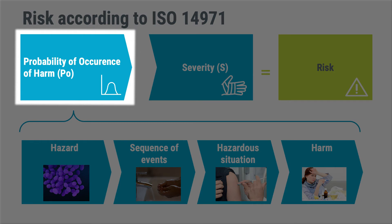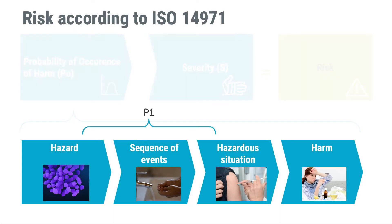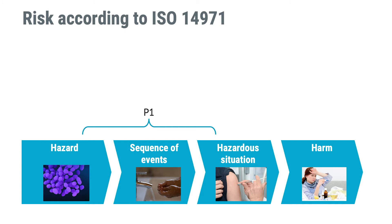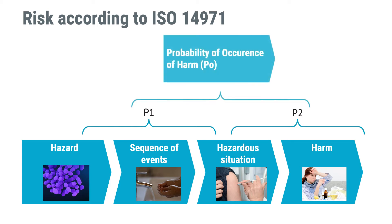Risk estimation starts with determining the probability of occurrence of harm, but before that we need to take a second in-depth look at PO. PO is based on two components. The first, P1, is the likelihood of the hazardous situation occurring, which is the result of the sequence of events that preceded the hazardous situation. In our example: what is the probability that someone forgets to wash their hands or doesn't do it well enough? The next part, P2, is the likelihood of the harm occurring from a hazardous situation — for example, the probability that bacteria makes its way from the hands through a needle stick and causes an infection. Combined, P1 and P2 result in the probability of occurrence of harm, PO.